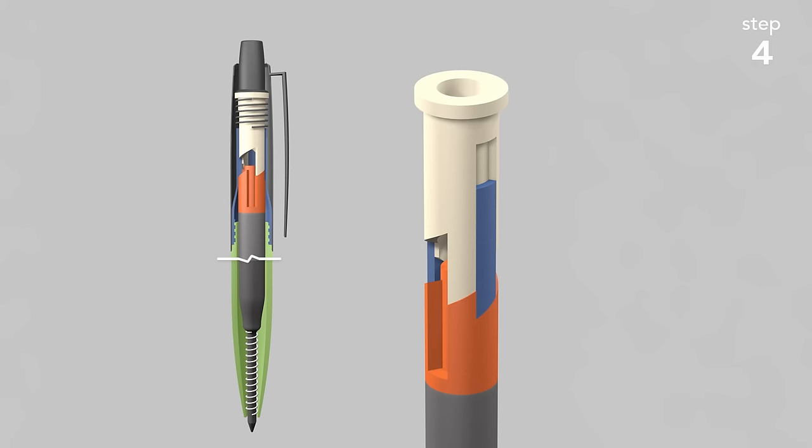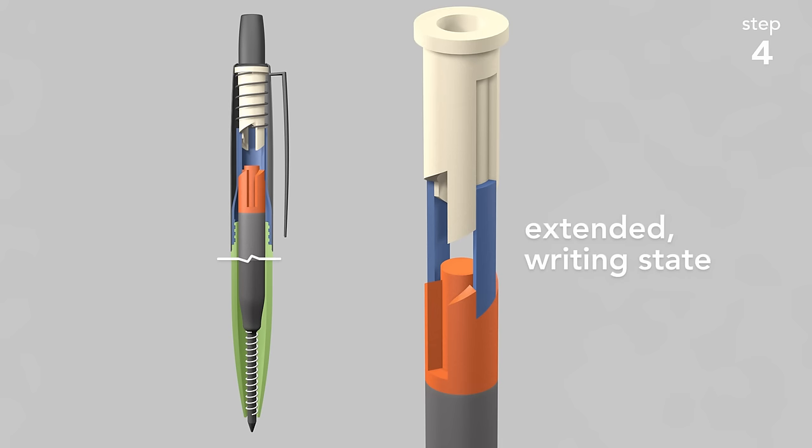Fourth, I release the button completely, and now the cam body remains locked in place. It cannot rotate nor move upward, and so the pen is ready to write.